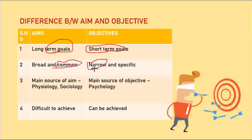When you have an aim to become a good player or a doctor, you will be able to achieve your goals, but you have to do many things to get there — so that is broad and common. Objectives are narrow and specific. In your daily goals, you can achieve them, and that is what makes them narrow and specific.